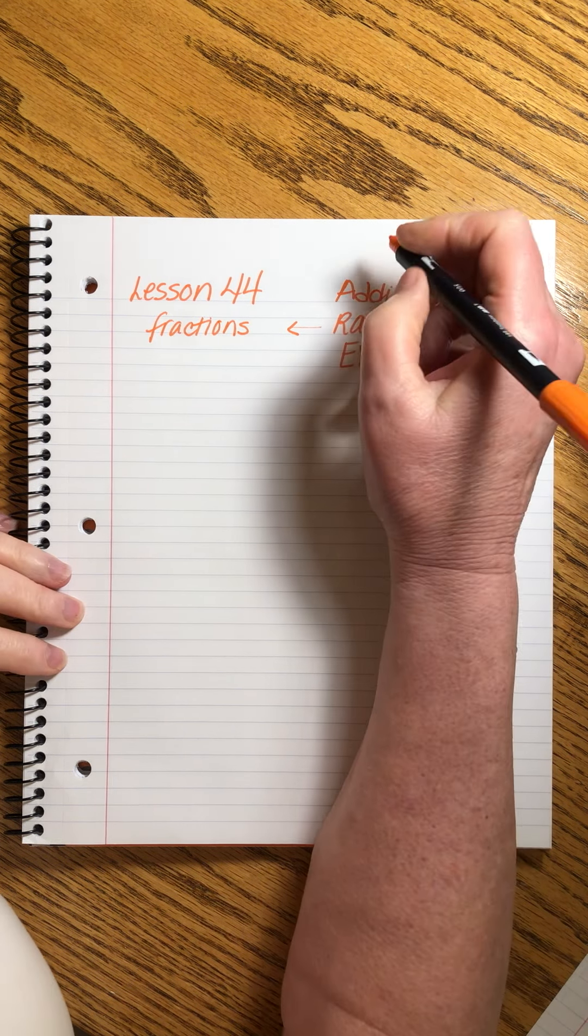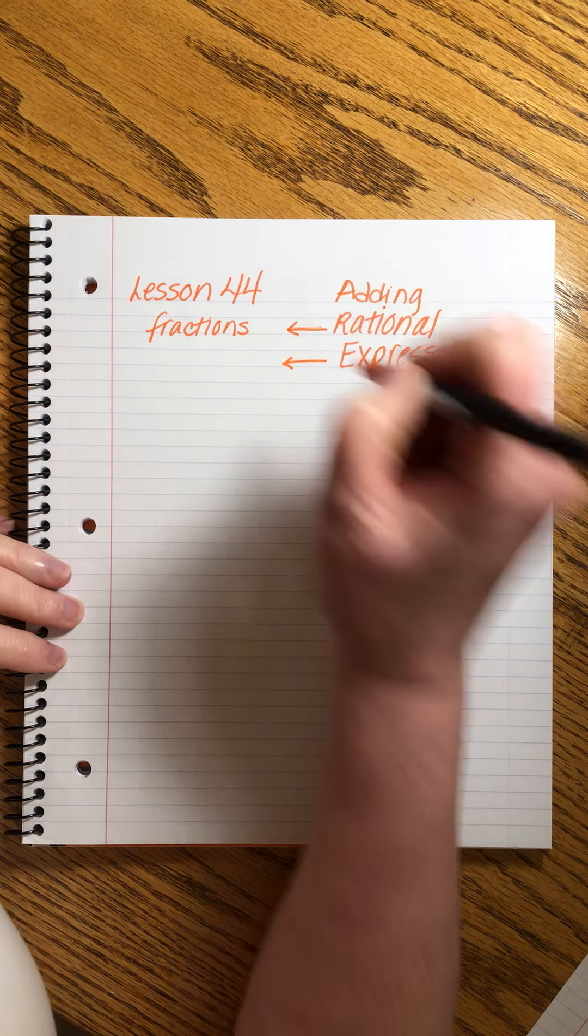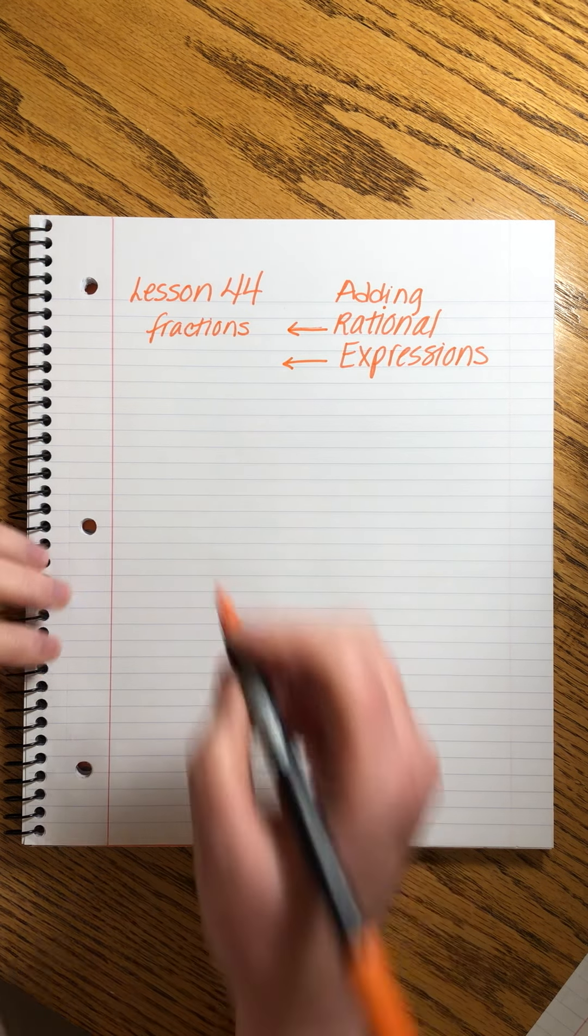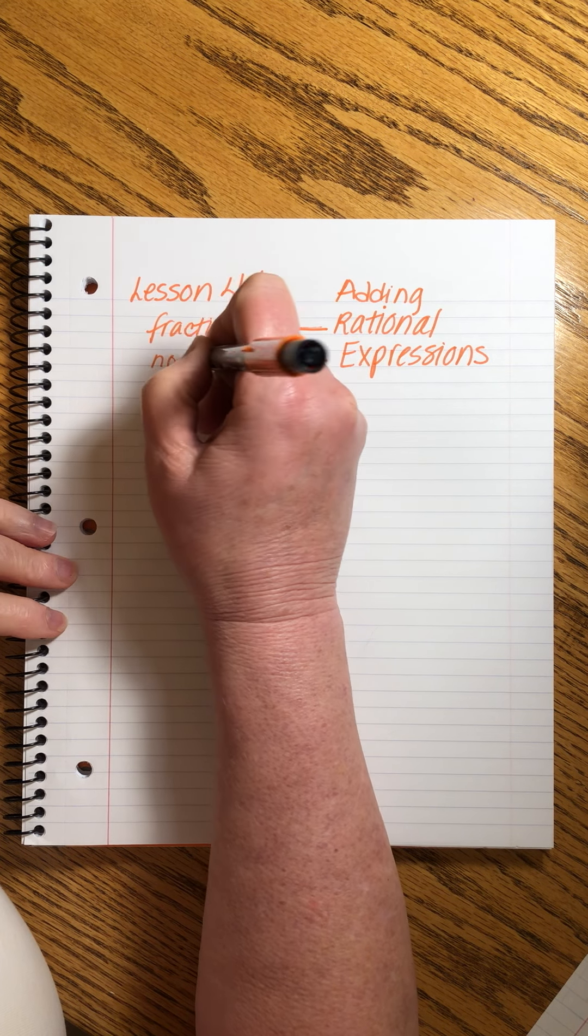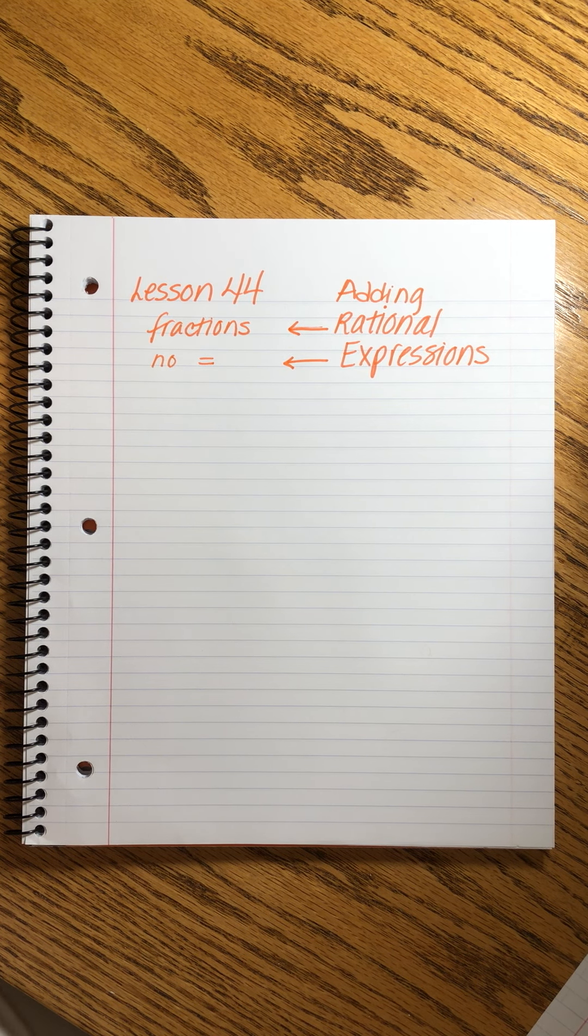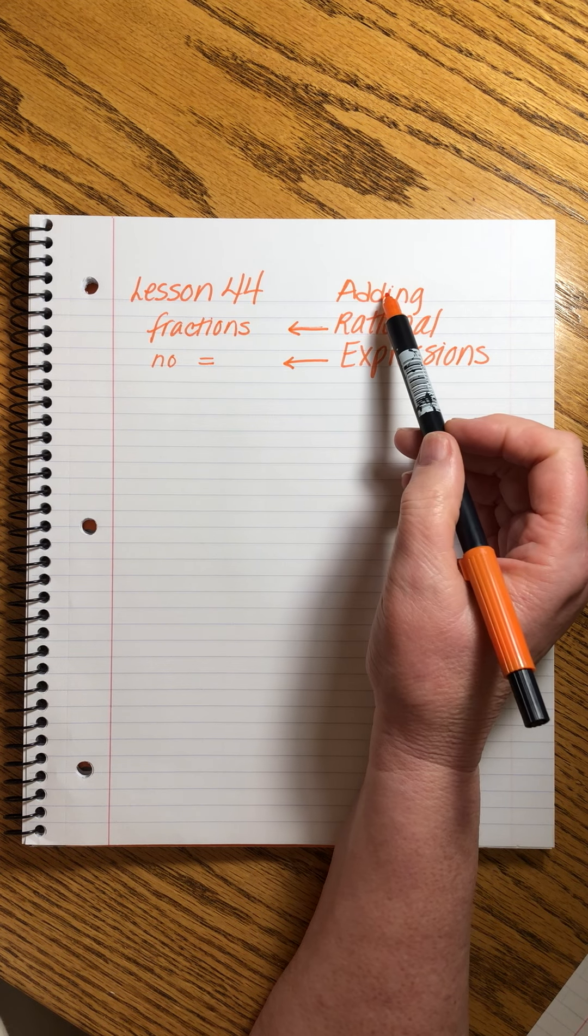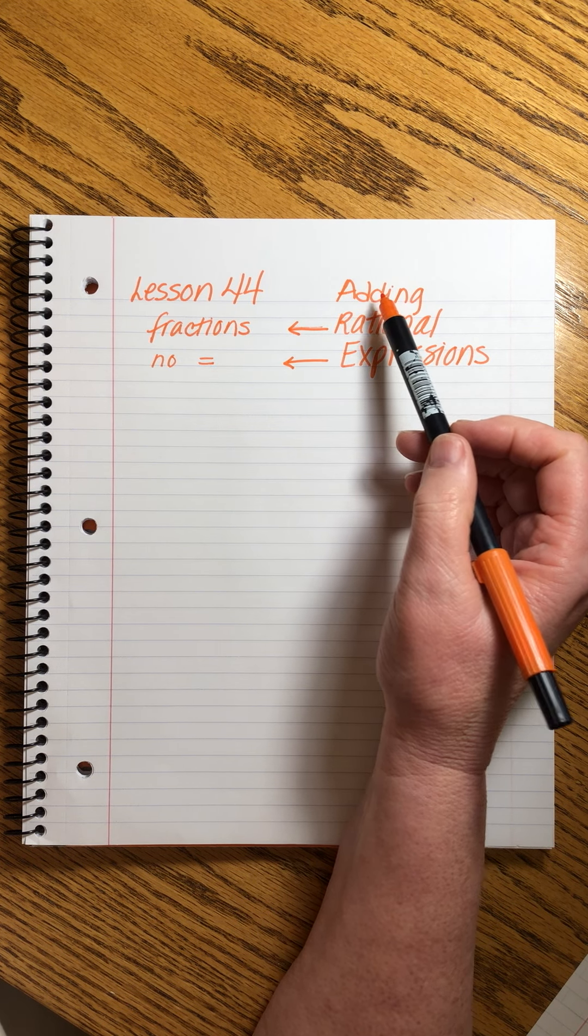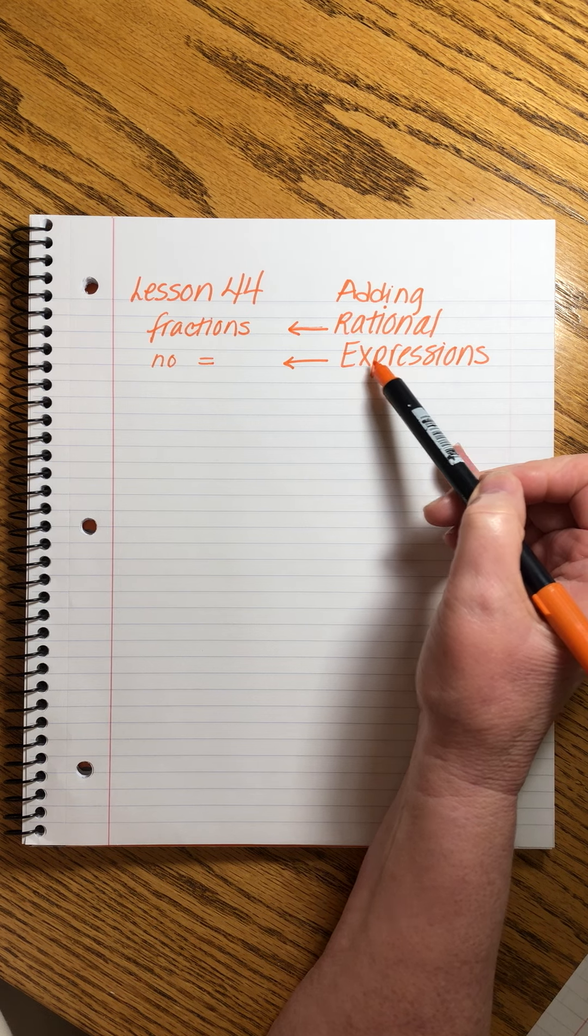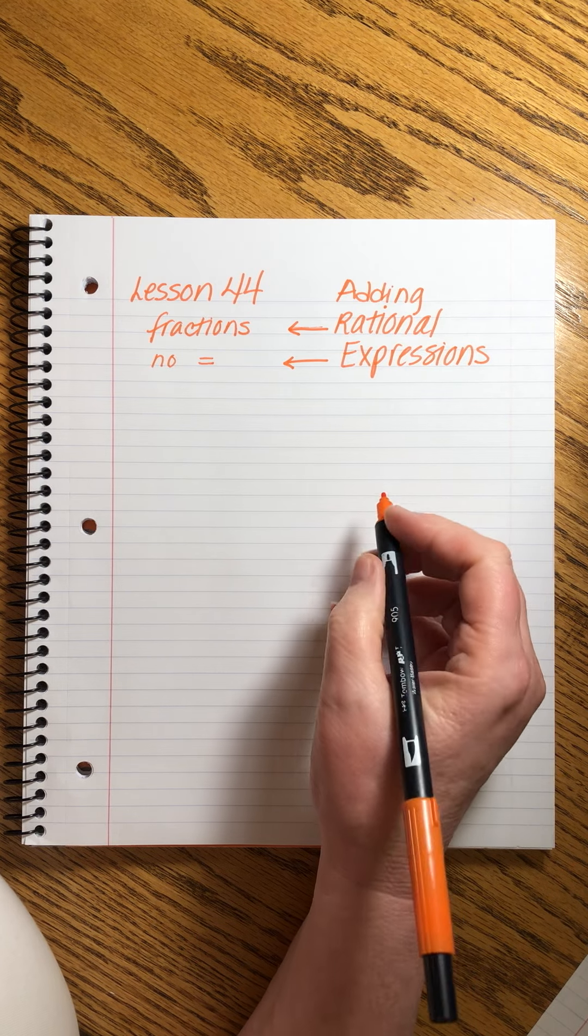Ratios are just fractions, so don't let that word freak you out. When you see expressions, then you know that there's no equal sign, so we're not solving, like we're not going to end up with x equals. We're just going to simplify as best we can. We're not going to solve for x or anything like that.